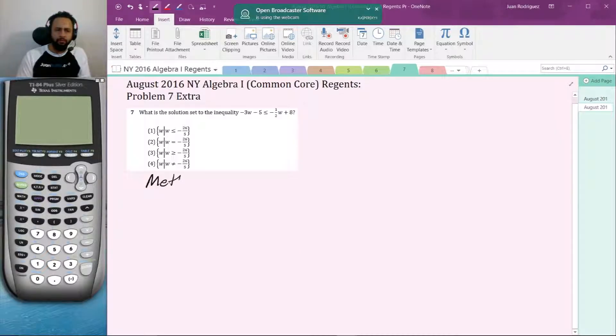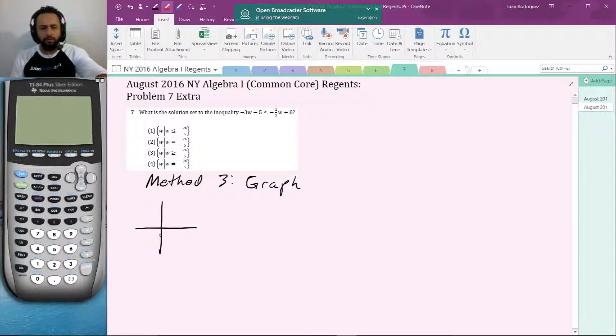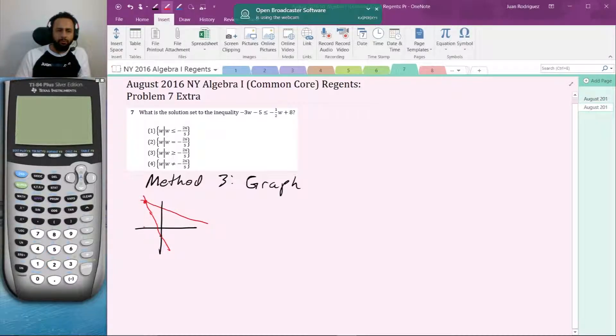Okay, so method 3 is graph. And the graphing calculator is going to produce a graph like this: negative 3W minus 5 is going to look like this, and negative one half W plus 8 is going to look like that. Okay, so they're going to have an intersection point somewhere around here, and so that's going to be our boundary point somewhere around here.